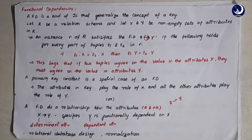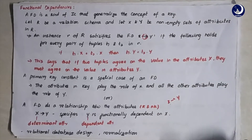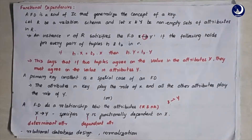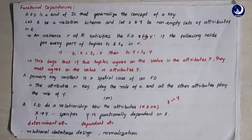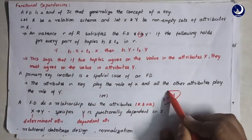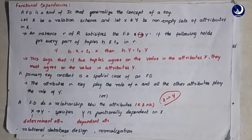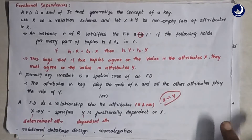For example, in our students table, X contains student ID and name, while Y contains contact, address, and age. With the help of X you can identify the person, meaning Y is existentially dependent on X. This is how we symbolize the functional dependency.